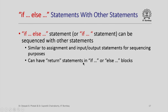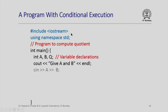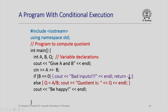We can also have return statements inside an if block or an else block. Here is a complete program with conditional execution: it includes compiler directives, comments, variable declarations, a message asking for values of a and b, and reads them. If b is 0, it outputs the bad-input message and returns -1 to indicate something went wrong. Otherwise, it computes the quotient, outputs it, prints "be happy," and returns 0 to indicate everything was fine.